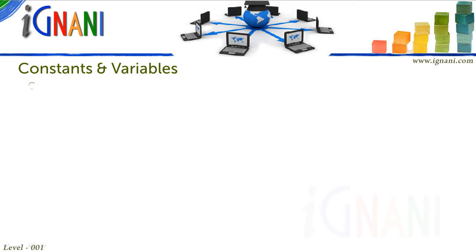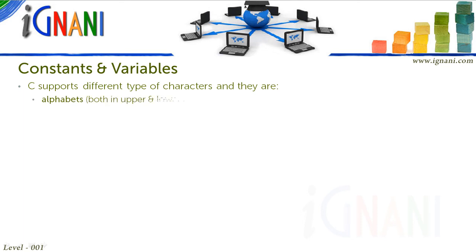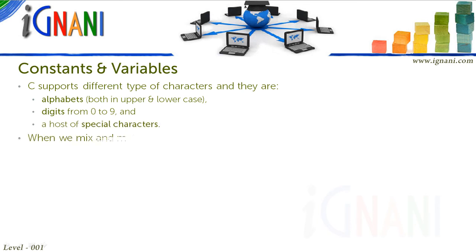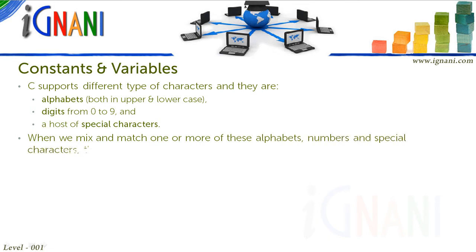As we saw in Chapter 2, C supports different types of characters, and they are: alphabets, both in upper and lower case; digits from 0 to 9; and a host of special characters. When we mix and match one or more of these alphabets, numbers, and special characters, they form constants, variables, and keywords.